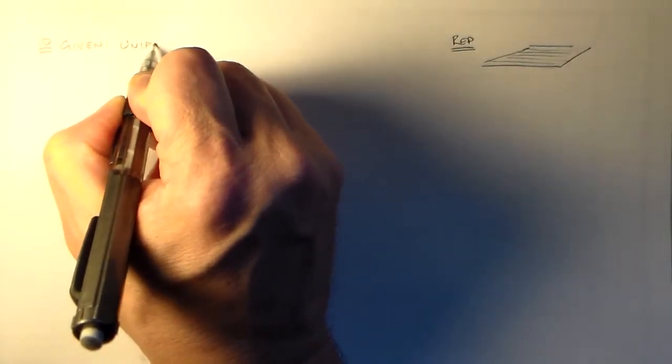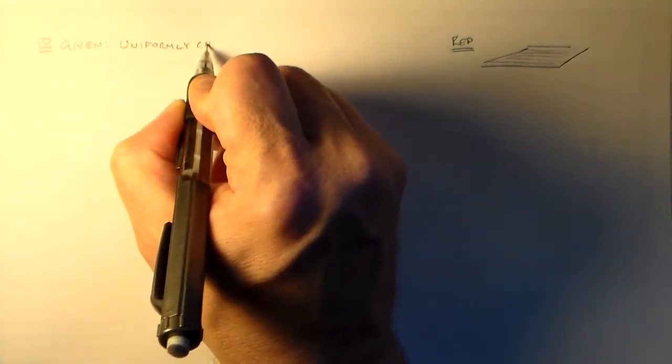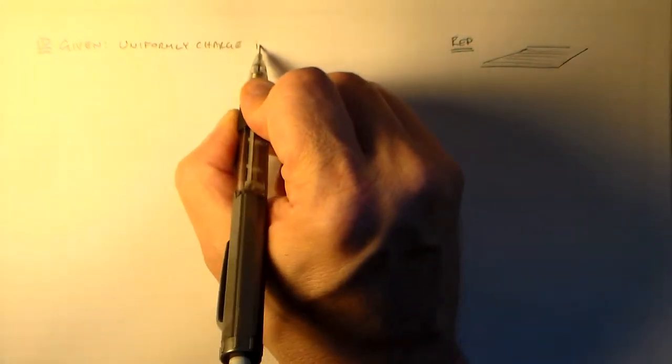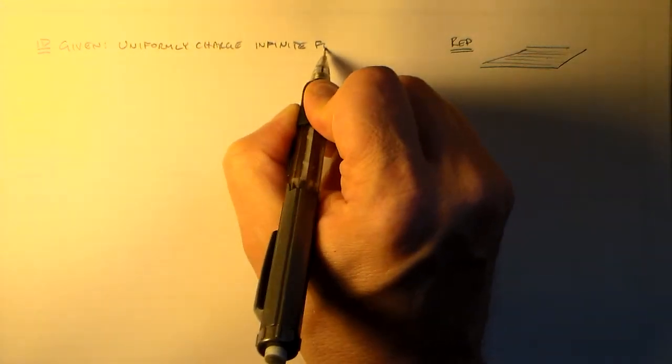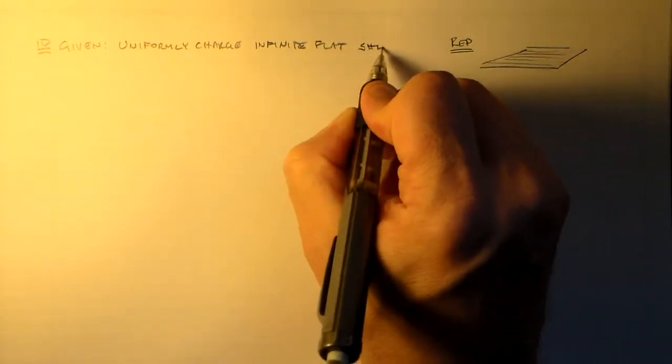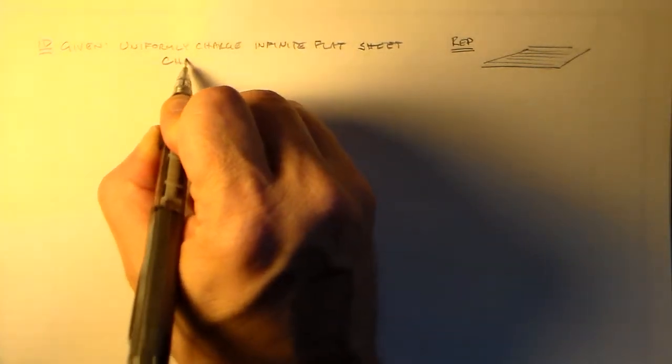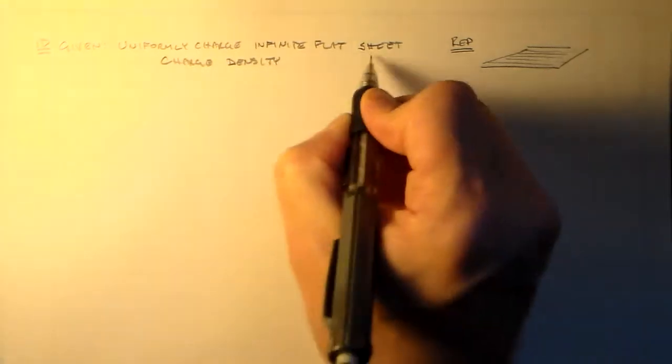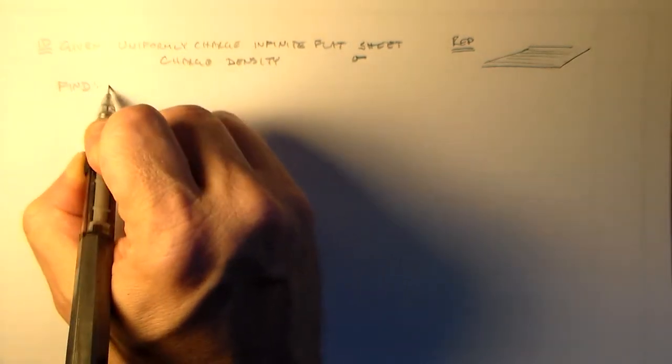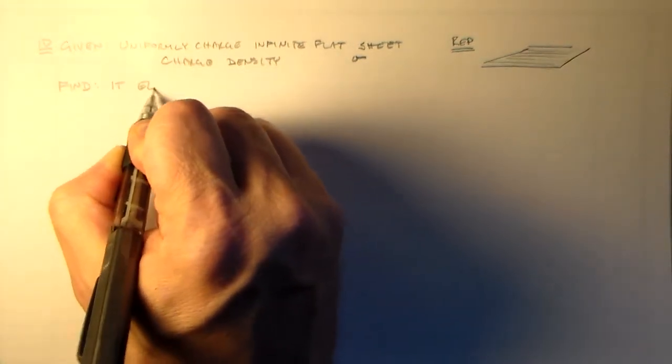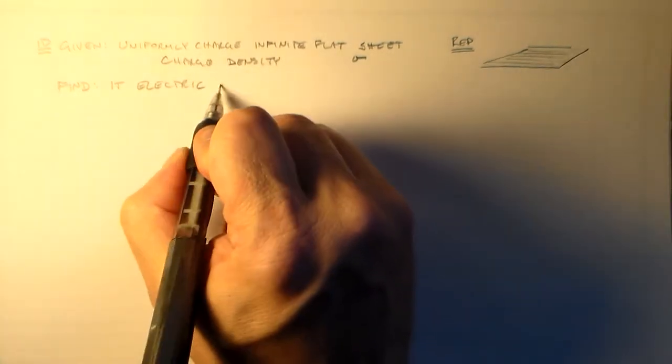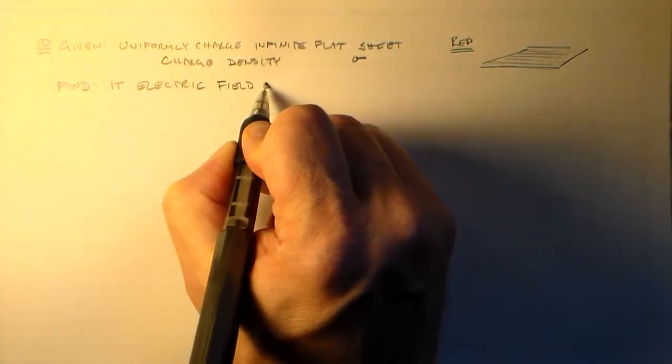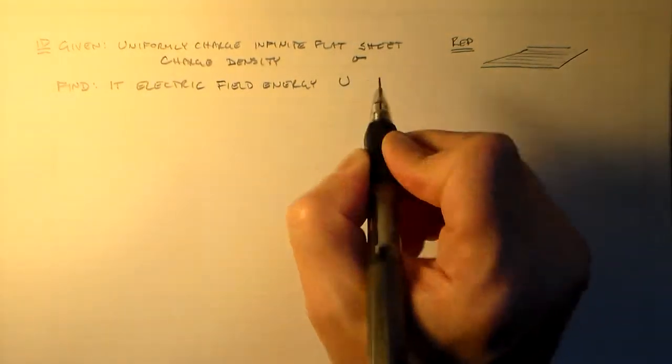And this is instructive. Alright, so we've got a uniform charge distribution, a uniformly charged infinite flat sheet. We've got some sort of charge density, so that's going to be sigma. We want to find its electric field energy, U.